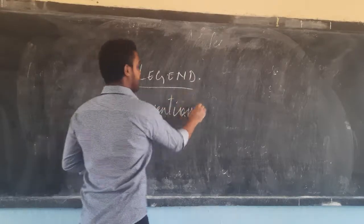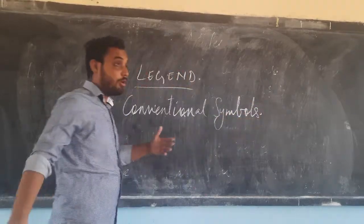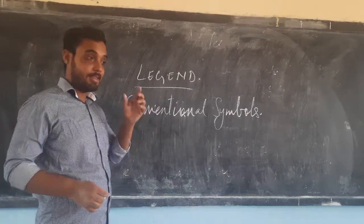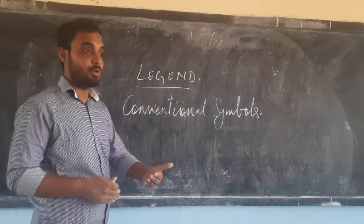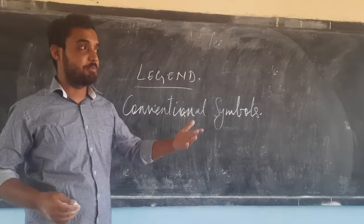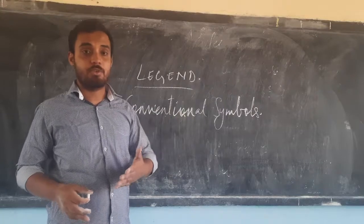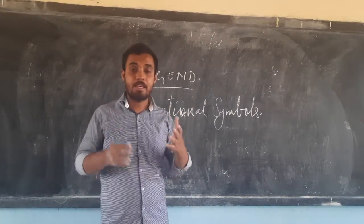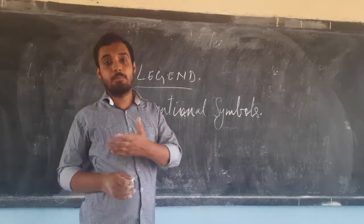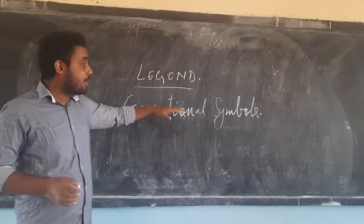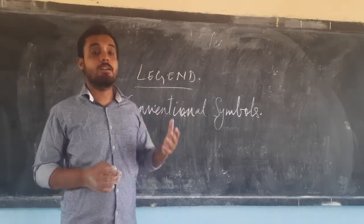Conventional symbols are meant for us to understand that this sign or symbol is meant for that particular thing — road, metal road, buildings, hospitals, school. They all have signs and symbols. Even while traveling, if you see the pedestrian crossing, we use symbols like that. We have that particular column in a map so that we can understand what the symbol is being used for.